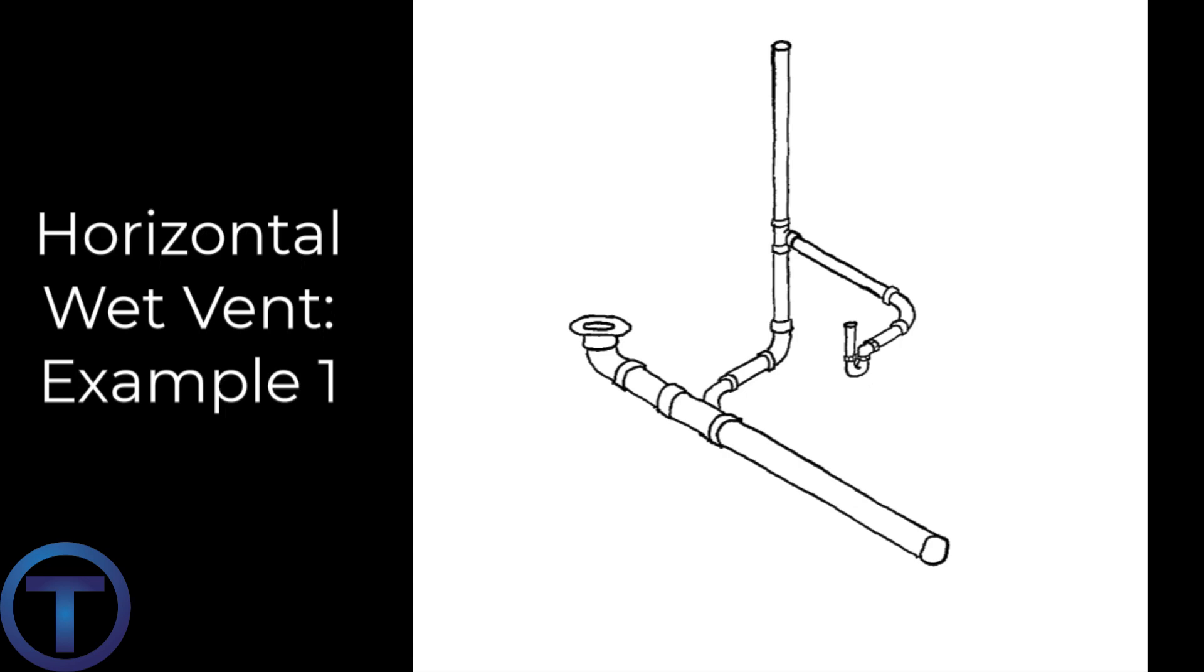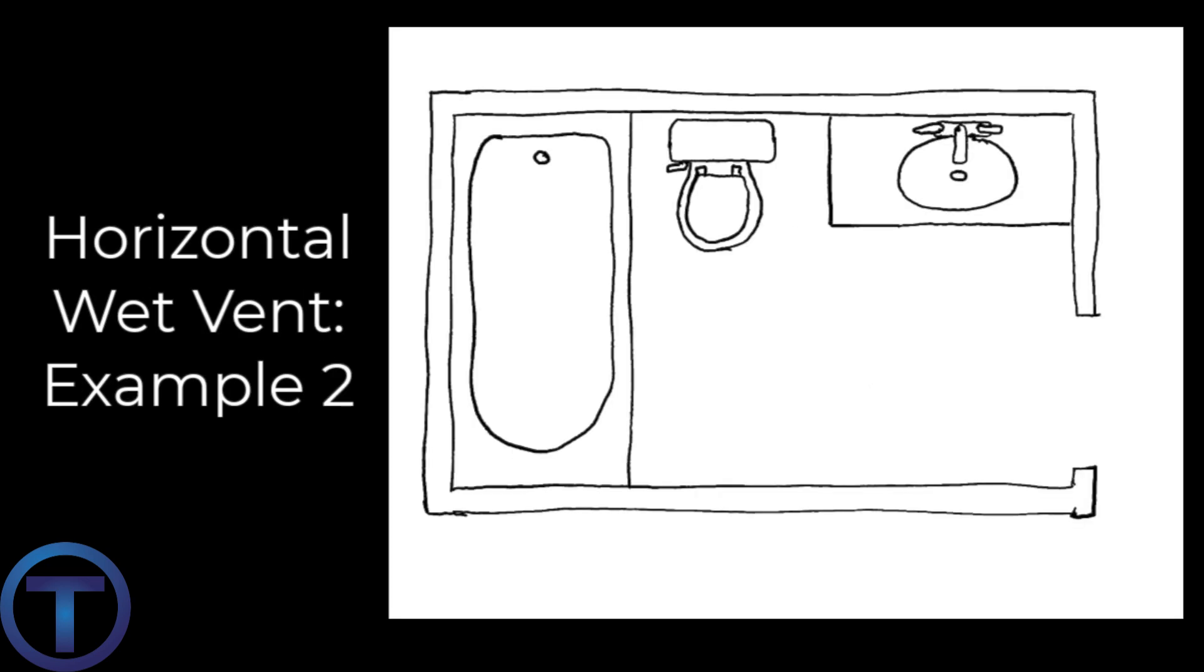A tub, a toilet, and a sink. We're going to use the sink drain as the horizontal wet vent and we're going to come towards the toilet, branching off with three-by-two wyes. First we branch off to the tub as we're coming towards the toilet, then we're going to branch off to the lavatory.